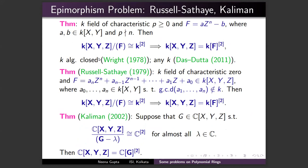There are other results on the Abhyankar–Sathaye / epimorphism problem. It was proved by David Wright when f has a particular form, and by Russell–Sathaye in three variables, and by Kaliman for the complex number field. If all translates of g are affine spaces, then g must be a coordinate up to a unit. This is not the complete list of results.